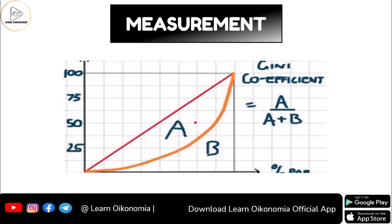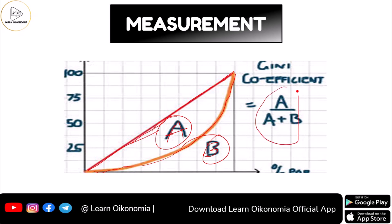With the Lorenz curve, you can calculate the Gini coefficient. You need the line of equality and the Lorenz curve, which together define two areas: area A and area B. The Gini coefficient is calculated using the formula A divided by A plus B. This shows how the Gini coefficient and the Lorenz curve are related.